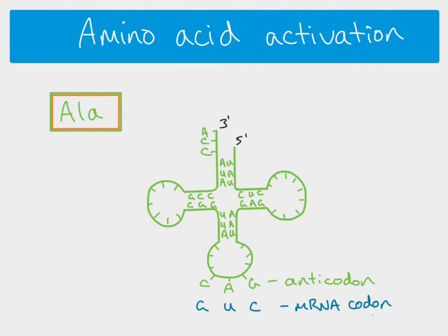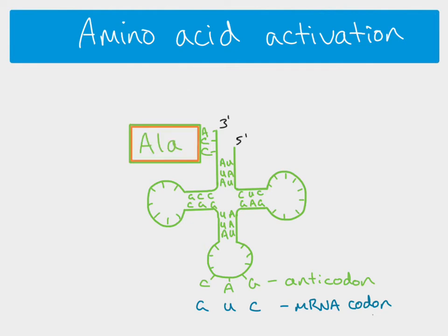Once the amino acid has been activated, it is able — with the use of an enzyme — to attach onto the amino acid activation site at the top of the transfer RNA, which is the ACC end. The transfer RNA is now able to go to the ribosome and bring the amino acid with it.